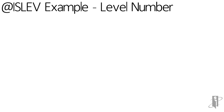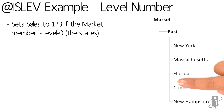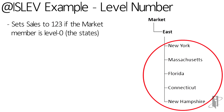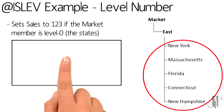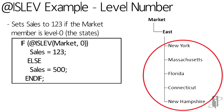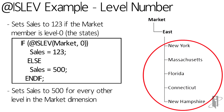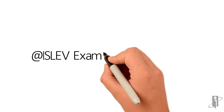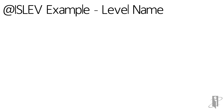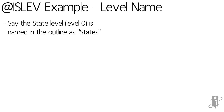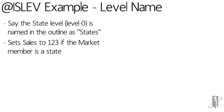Let's take a look at an ISLEV function using level number. In this example, we would like sales to return 123 if the member is from level zero of the market dimension. Otherwise, for all other levels of the market dimension, we want sales to return 500.